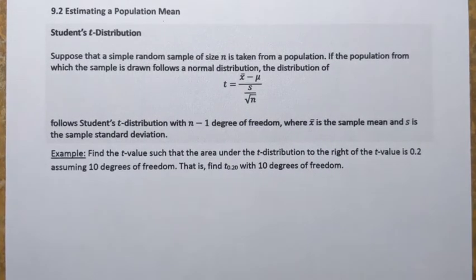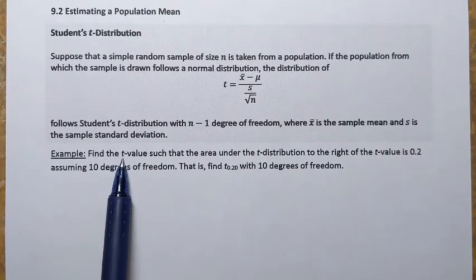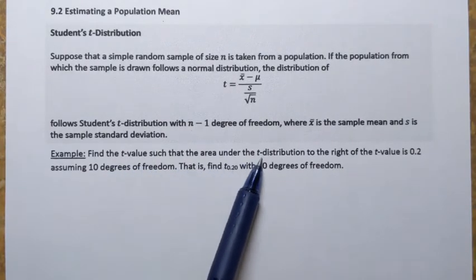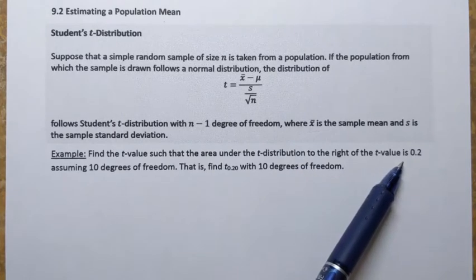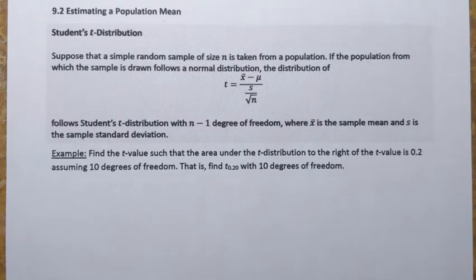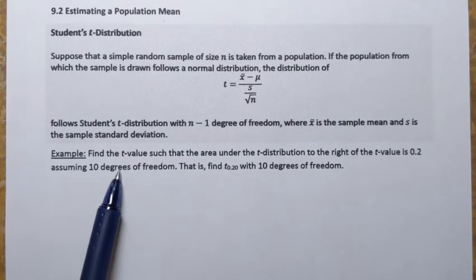So let's try this example. It says find the t-value such that the area under the t-distribution to the right of the t-value is 0.2, assuming 10 degrees of freedom.